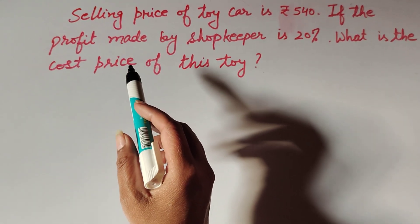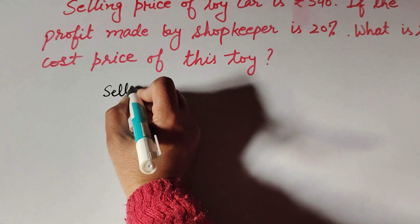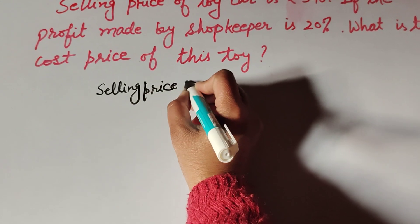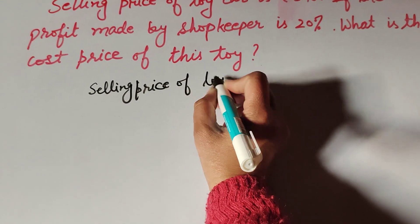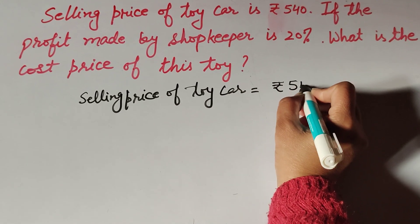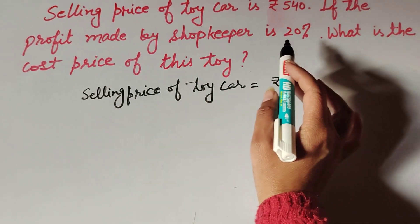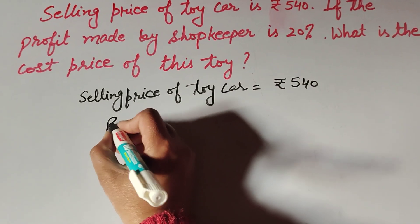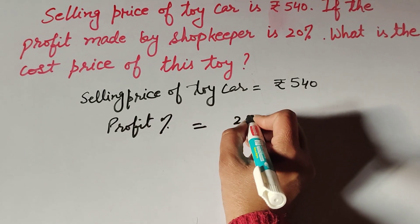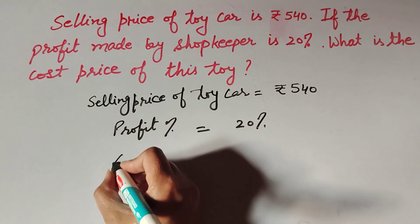In this question we find the cost price of the toy car. Given: selling price of toy car is equal to rupees 540. If the profit made by shopkeeper is 20 percent, so profit percent is equal to 20 percent. We find cost price of this toy car.